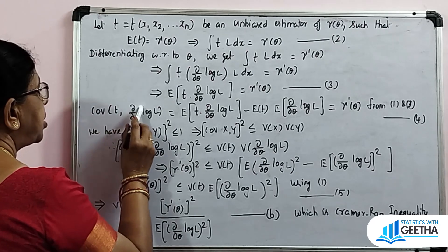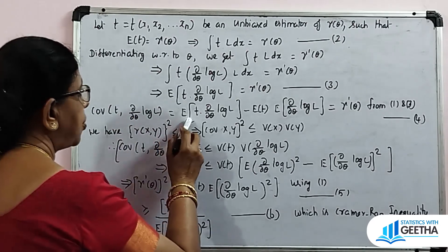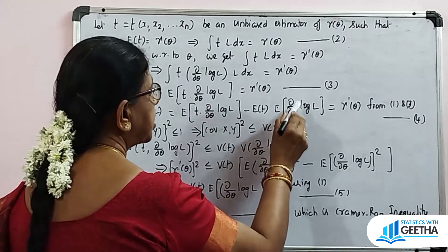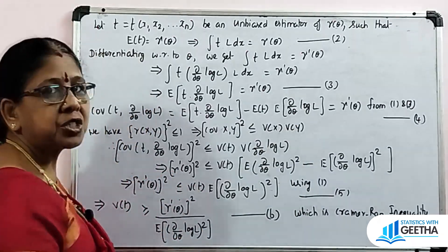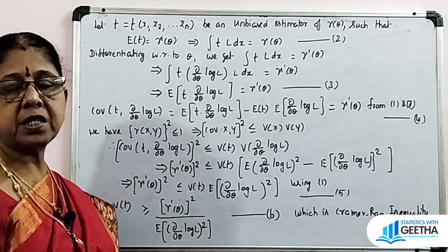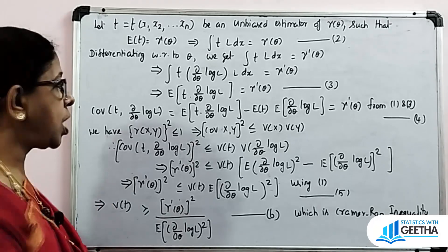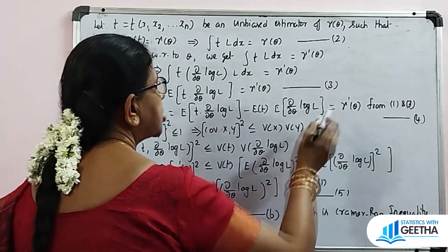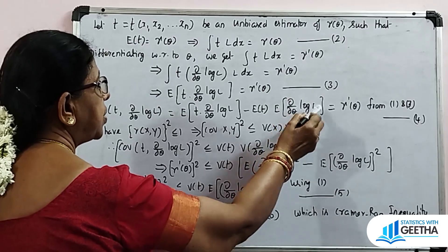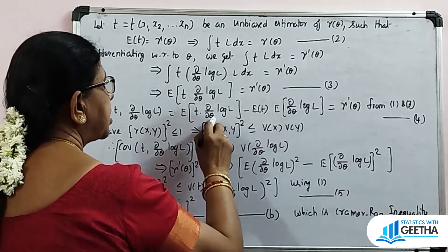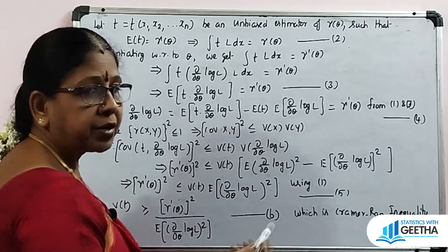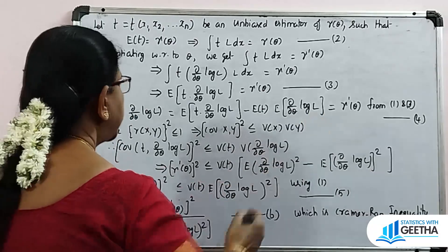Consider Cov(t, ∂/∂θ log L) = E[t · ∂/∂θ log L] − E[t] · E[∂/∂θ log L]. Using the formula Cov(X, Y) = E[XY] − E[X]·E[Y], this equals γ'(θ), from equations 1 and 3. This is equation number 4.